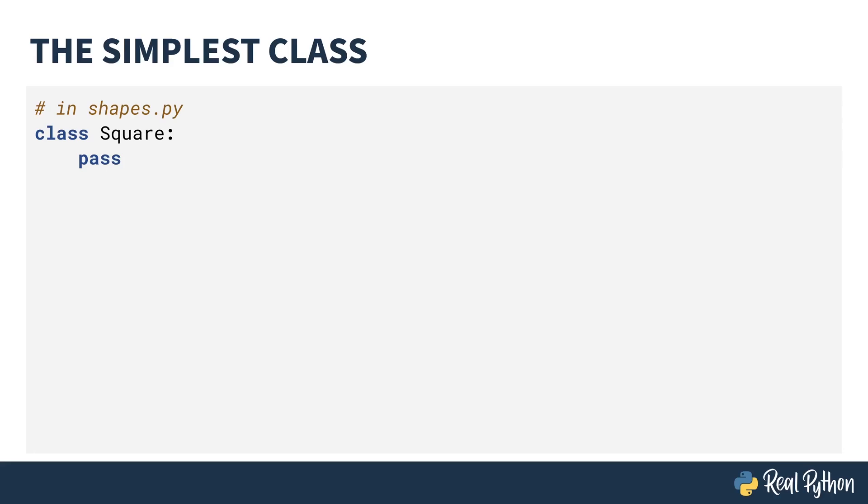This is the simplest possible class. It's two lines. It starts with the keyword class and the name of the class square. By convention in Python, you always capitalize the name of your class. The pass keyword tells Python that there's nothing else in this class besides an empty definition. If you open up a REPL and import the square class from the shapes, you can then instantiate it by calling it. The square on the right-hand side, capital S, is my class. I call it using the parentheses and I end up with an object that I've named square.